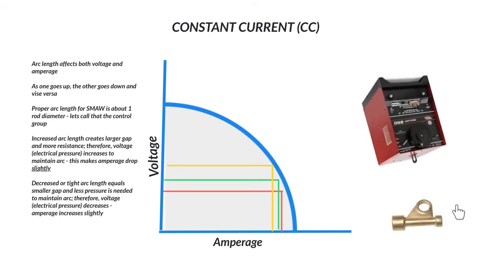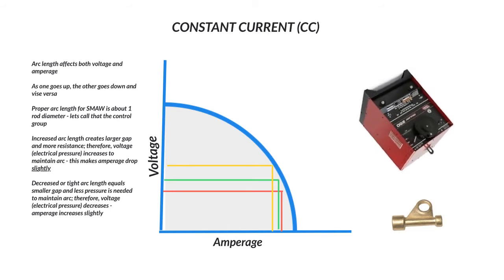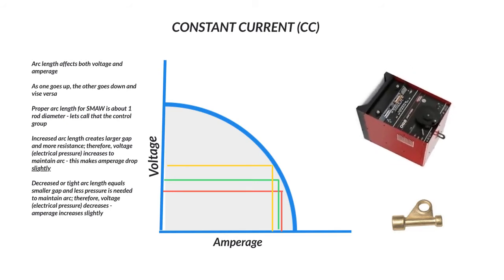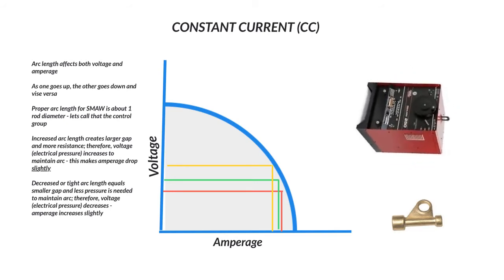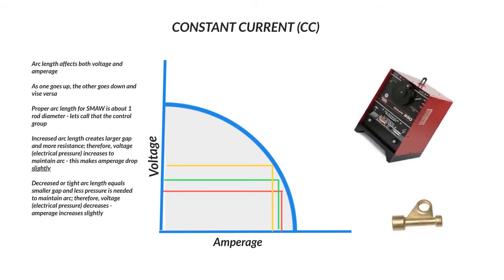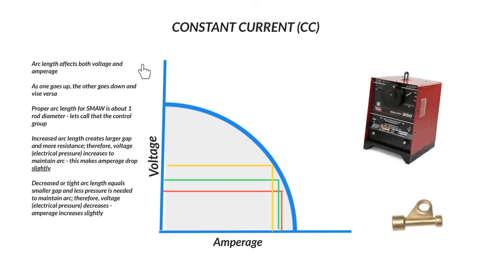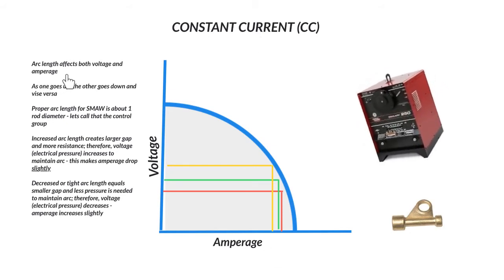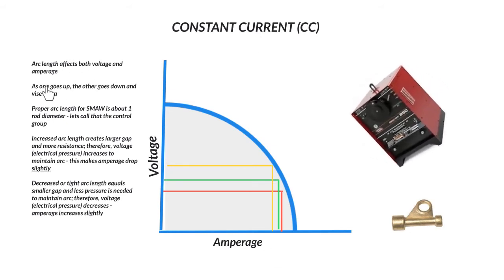So you can use this power cable adapter with a current stick stinger and really just hook up there. Anyways, regardless of whether it's TIG or stick, all of this applies. So arc length affects both voltage and amperage.